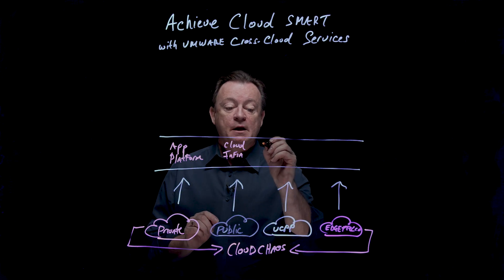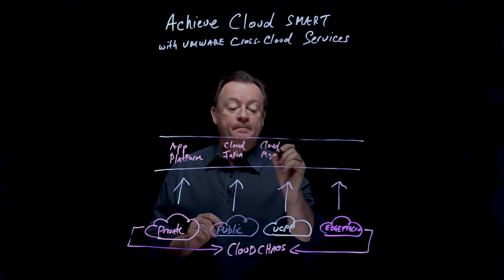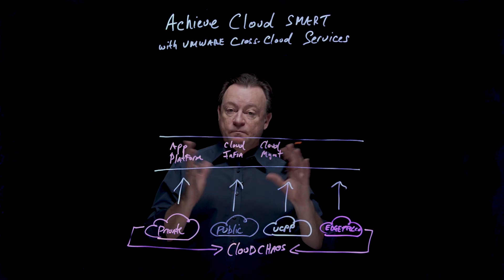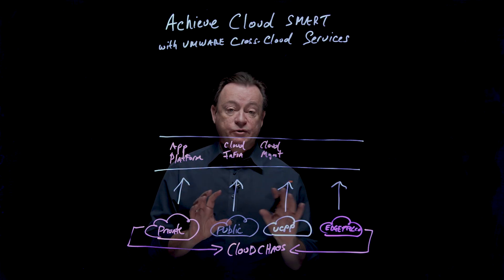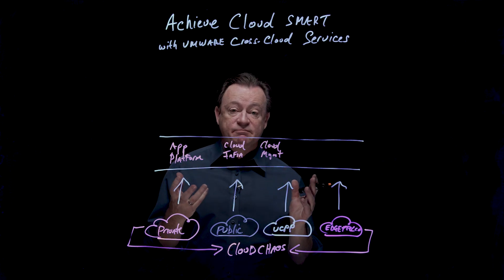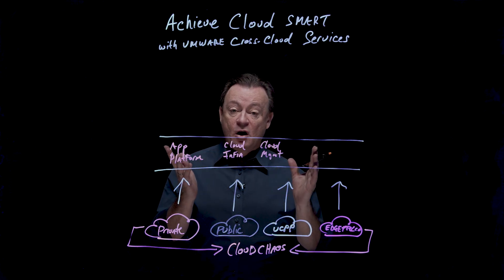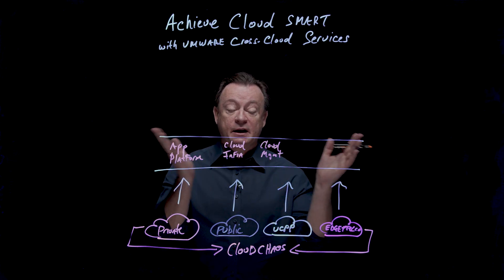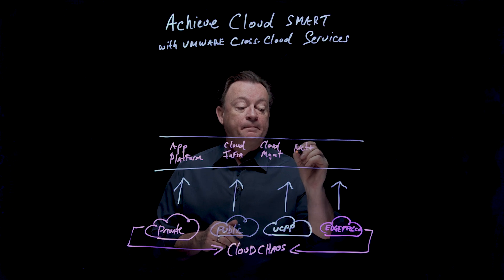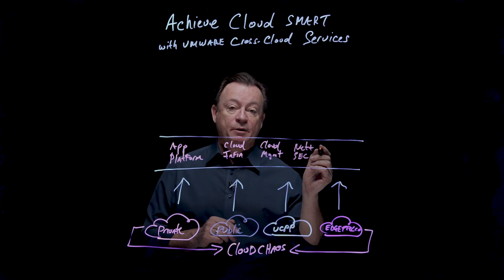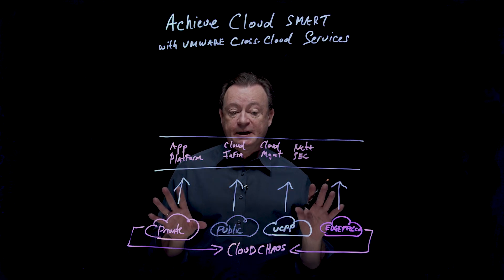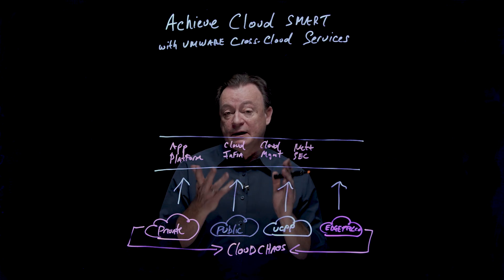Within cloud management, we have ARIA and Skyline — management about the workload. Once the workload is running, let's operate it: governance, cost, and security. I want to uncover events and turn those into insights. ARIA offers ARIA Hub powered by ARIA Graph, so I can have a single point of entry and federate these services together. Next we have network and security — Carbon Black and NSX as examples. Moving to a zero trust network, I can apply network policies consistently across all my clouds, and if there is any drift, I can see that through ARIA.